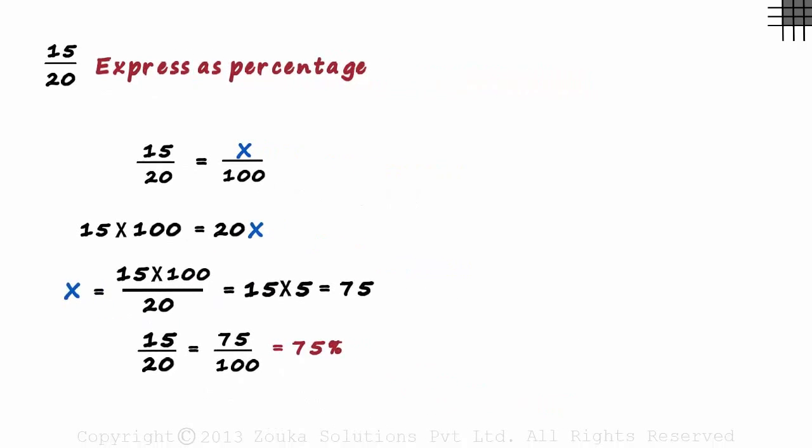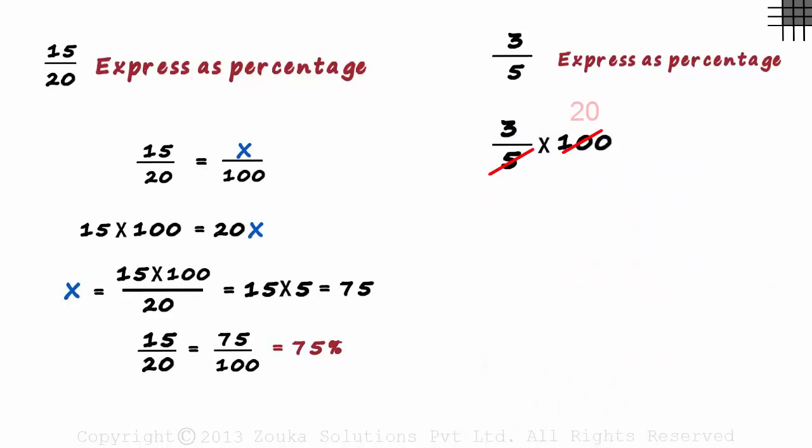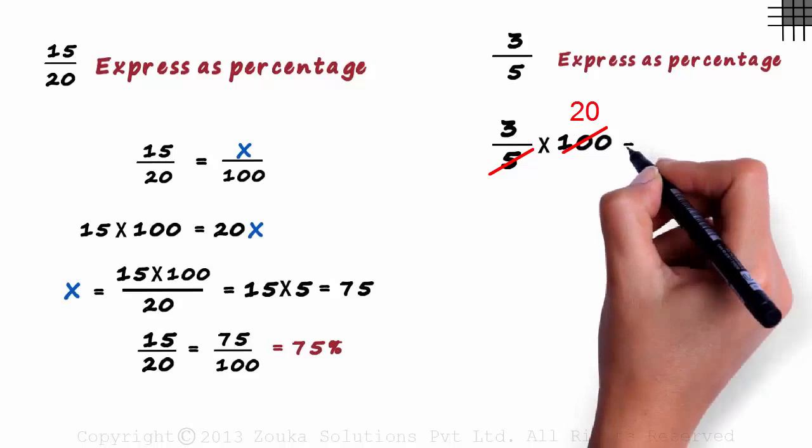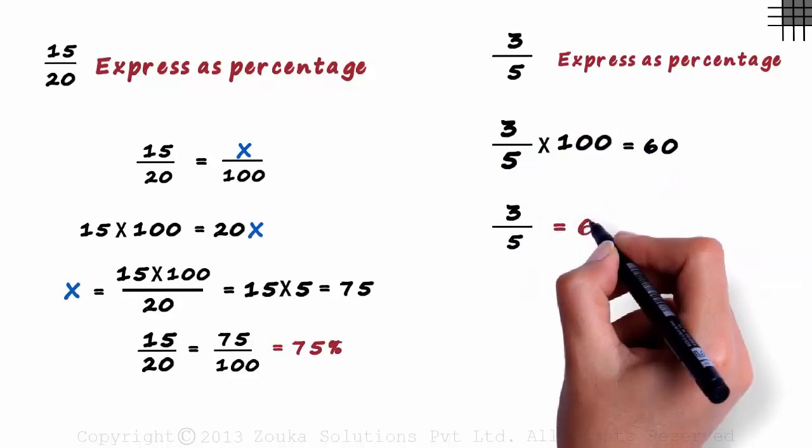Let's express 3 by 5 as a percentage. We multiply 3 by 5 by 100. 5 times 20 is 100 and 20 times 3 is 60. That gives us 60. So 3 by 5 is equal to 60%.